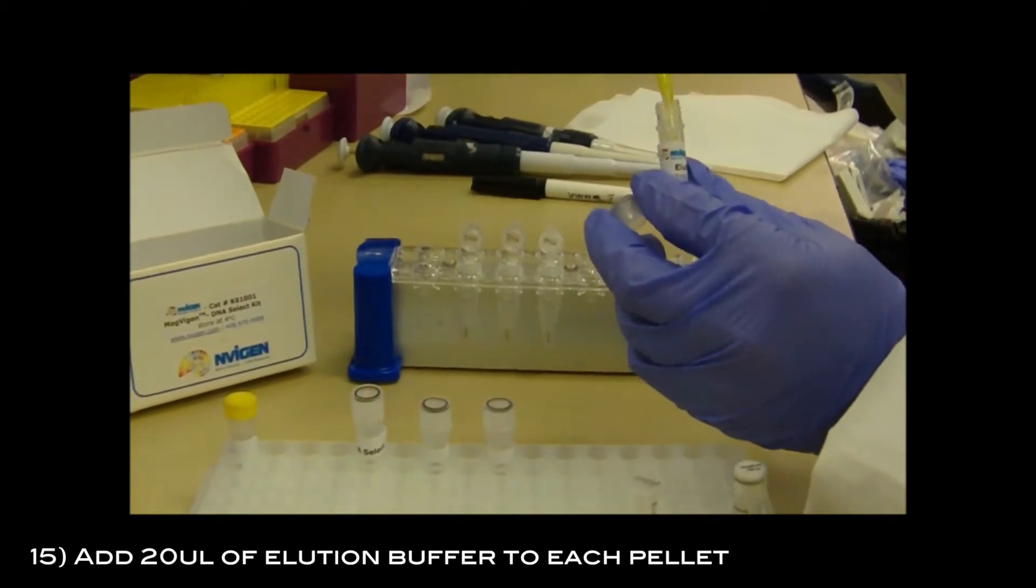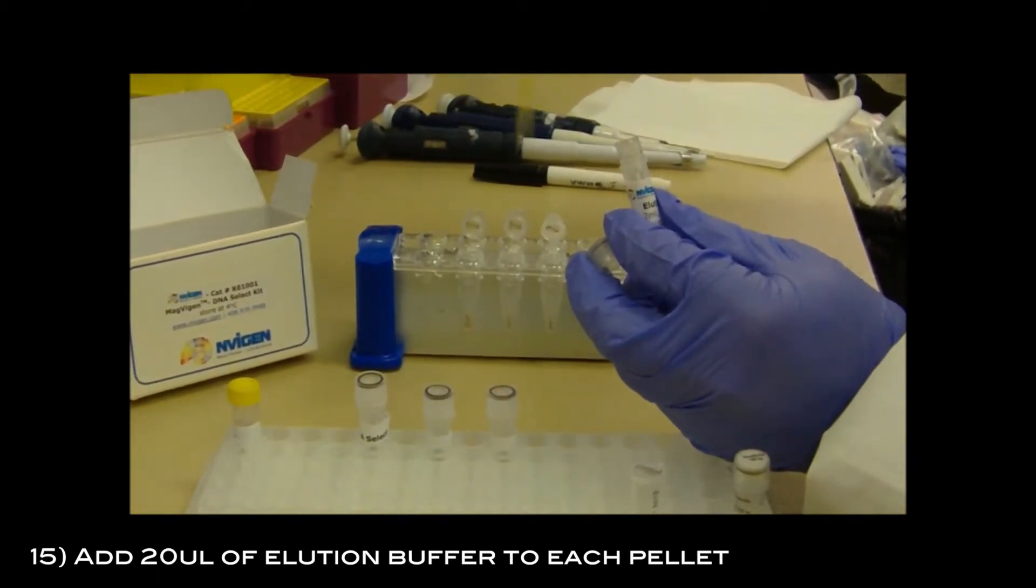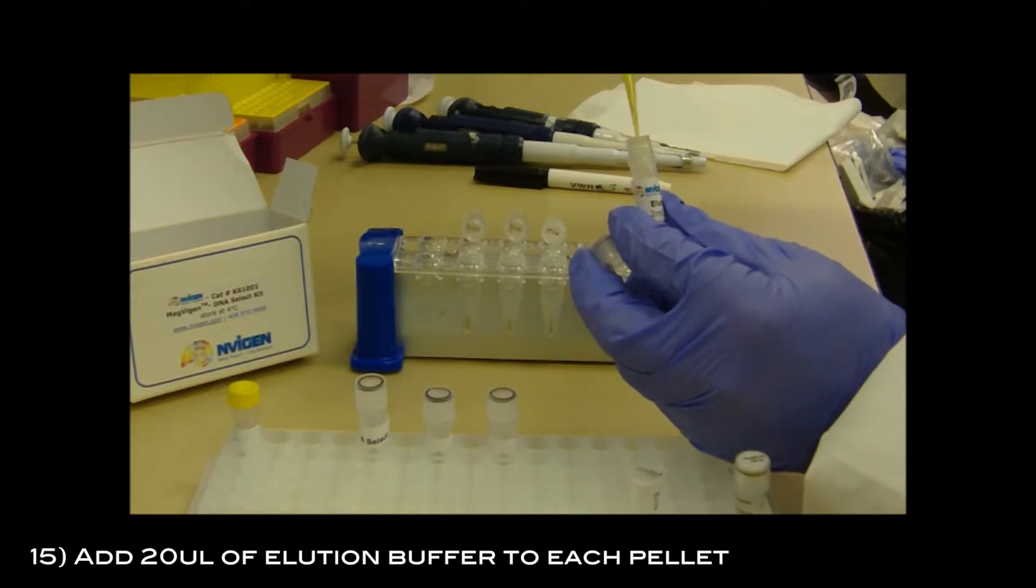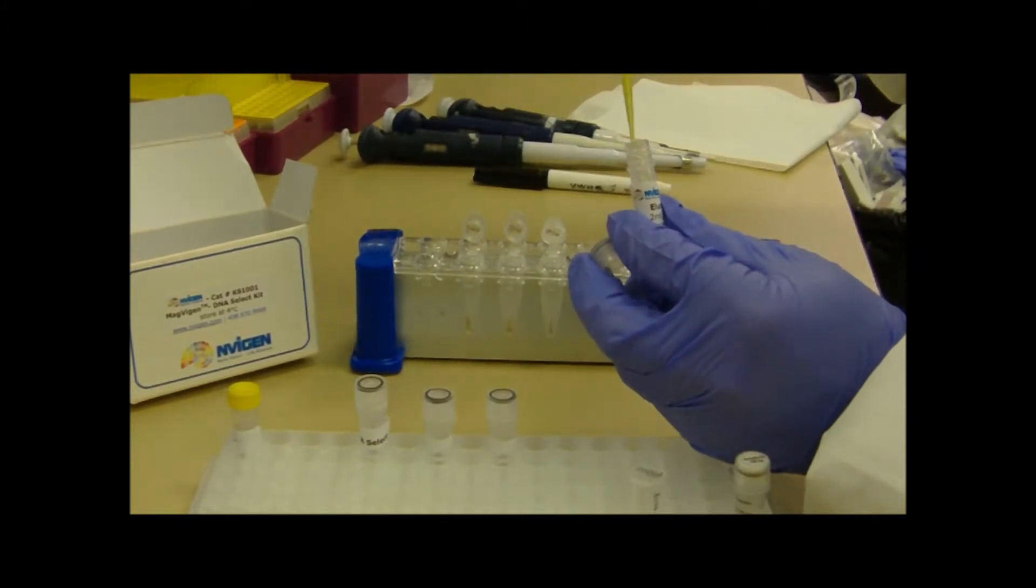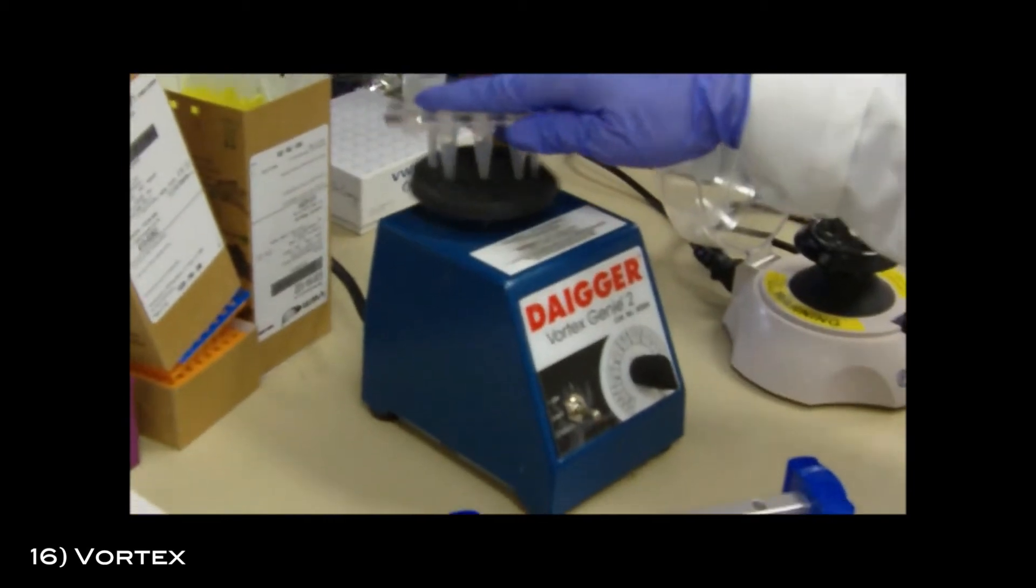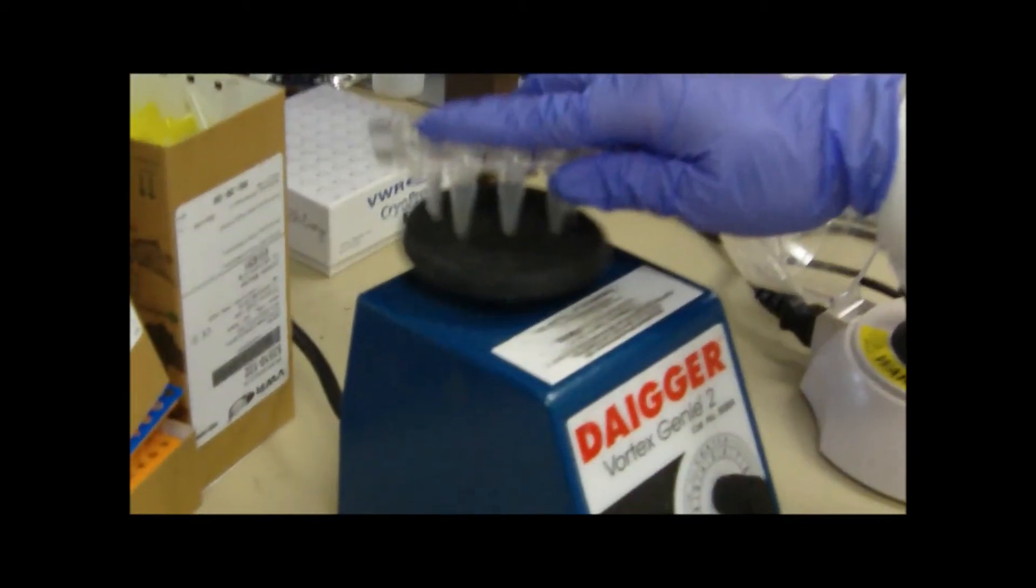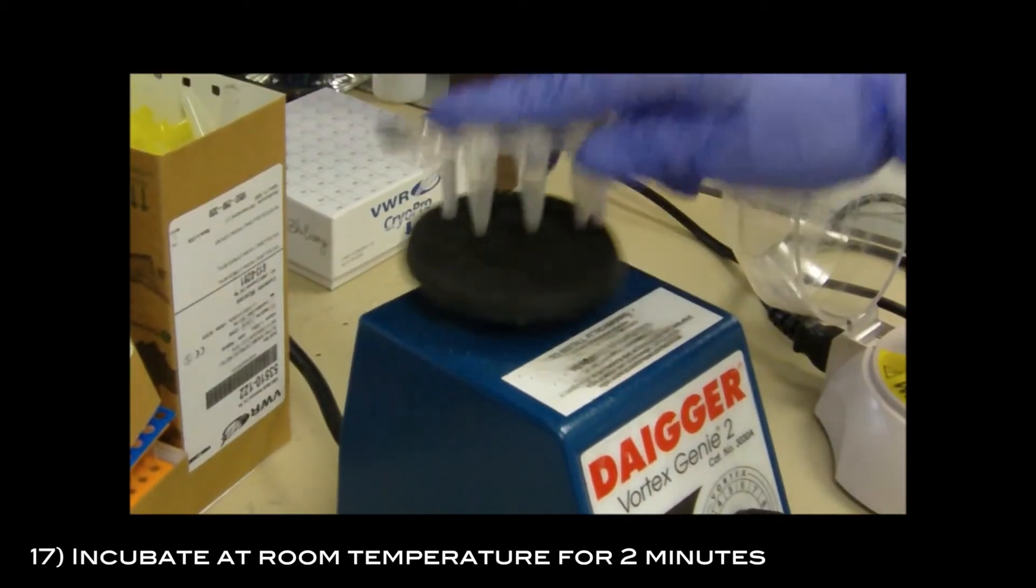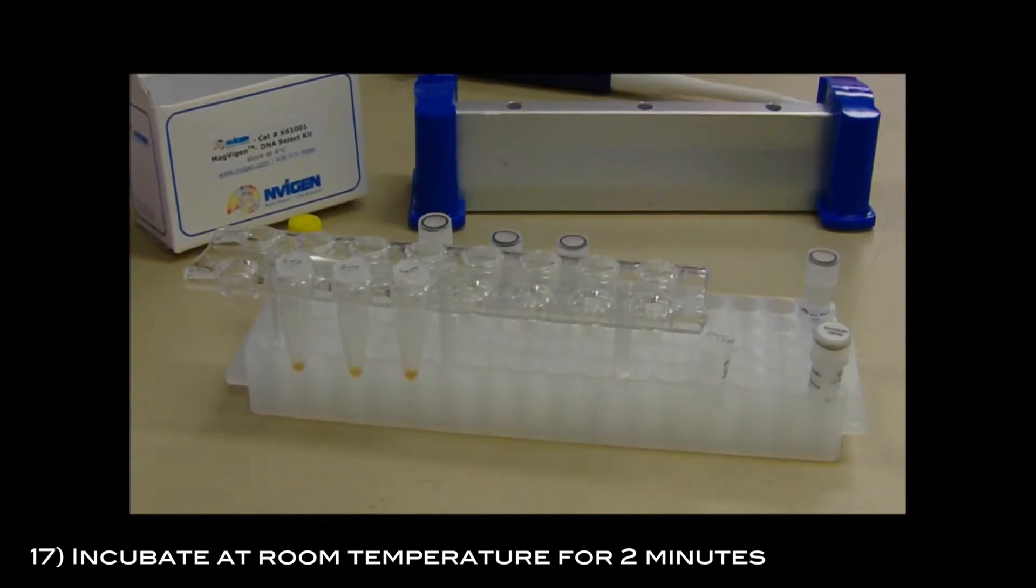Add 20 microliters of elution buffer to each pellet and vortex to mix well. Incubate at room temperature for 2 minutes.